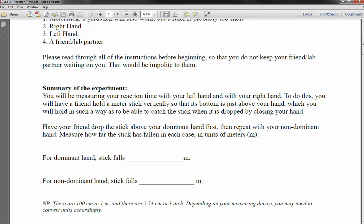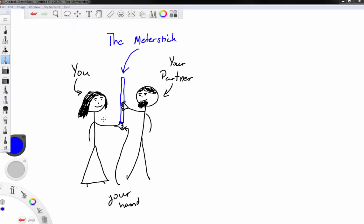Basically to recap as a drawing, your start position should be something like this. Here you are, here's your partner, your partner is holding the meter stick just above your hand, your hand is ready to catch the meter stick.